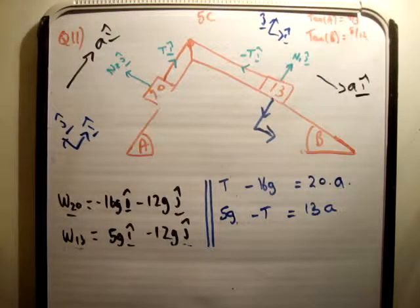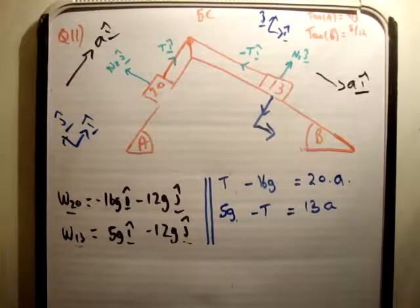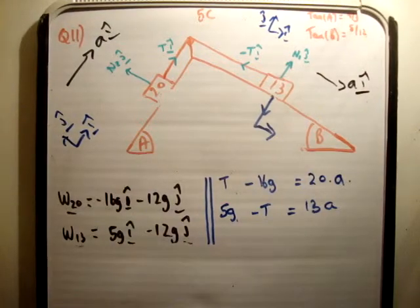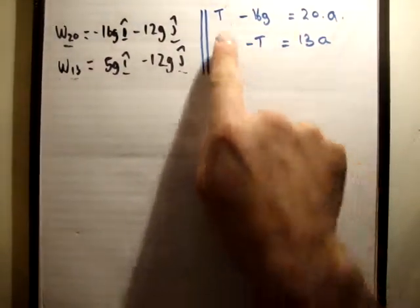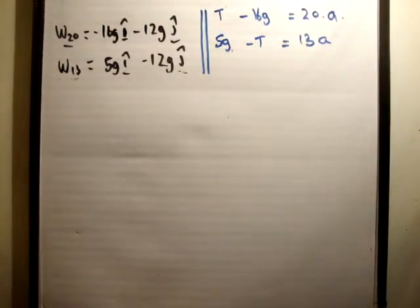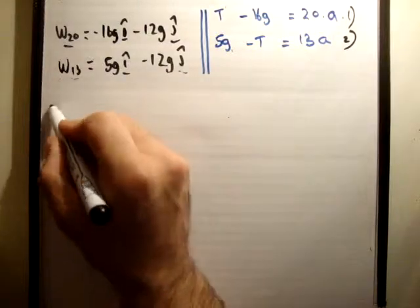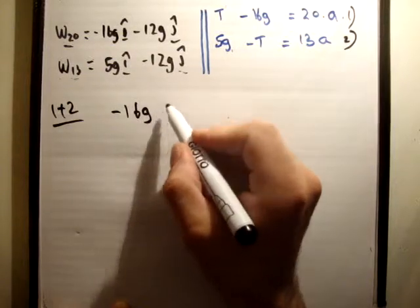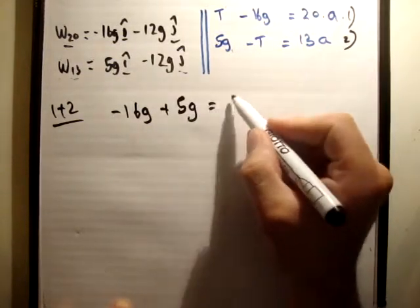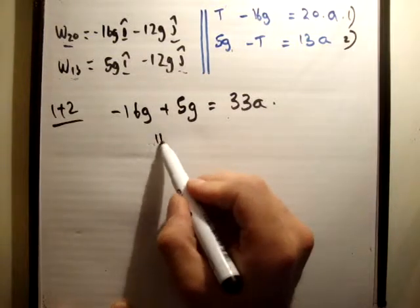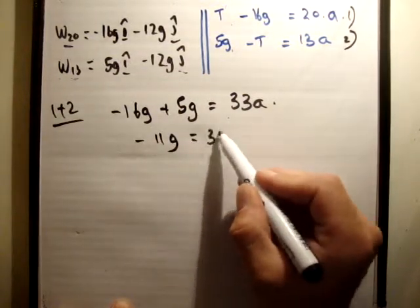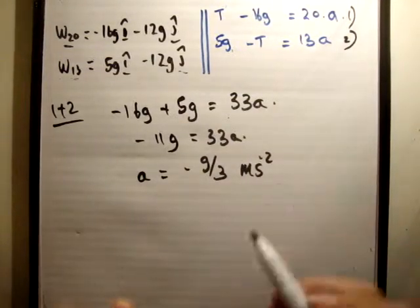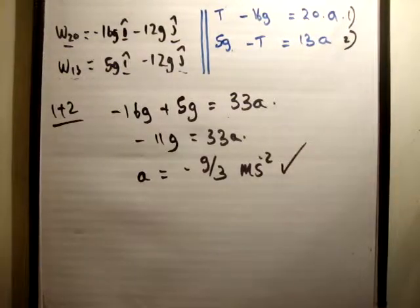Now what we need to do is work out our acceleration vector and our tensional vector. And that's going to be pretty straightforward. So let's just move down here so we have a bit of room. We have two equations and we have two unknowns, which is what we need. So if I call this 1 and this 2, if I add 1 and 2, the t's will cancel. So you're going to get negative 16g plus 5g is equal to 33a. So it's going to be 11g negative is equal to 33a. Therefore, a is equal to negative g over 3 meters per second squared. So that's correct.